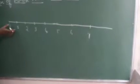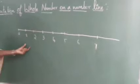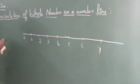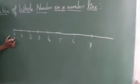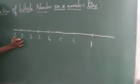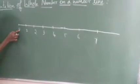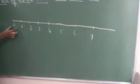This is the representation of whole numbers on a number line, starting from 0. Now, what is the distance between 0 and 1? To find it, which is the greater number — 0 or 1? 1 is the greater number, so 1 minus 0 equals 1. The distance between 0 and 1 is 1. We call this the unit distance.